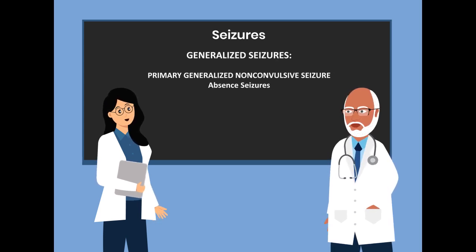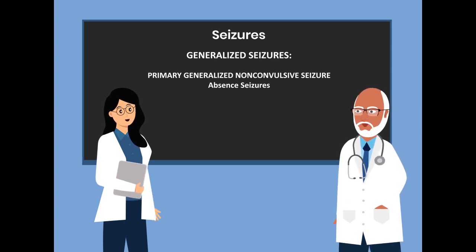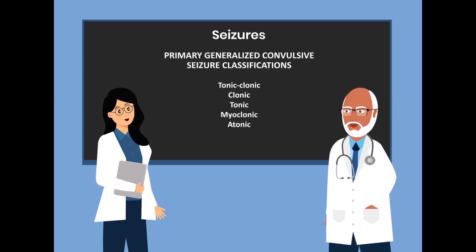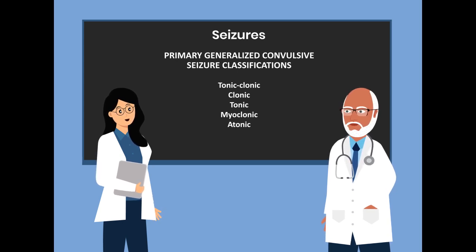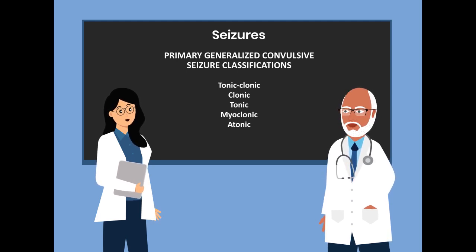The next is generalized seizures. With generalized seizures, we consider primary generalized non-convulsive seizure, which would include absence seizures. Then we have primary generalized convulsive seizures, which would include tonic-clonic, clonic, tonic, myoclonic, and atonic manifestations.